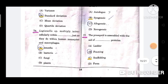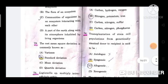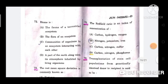Question number 74: Legionella species multiply intracellularly within -- just as they do within human monocytes and macrophages. The correct answer is option A, amoeba. Next question, question number 75: The Redfield ratio is an index of concentration of? Option B, nitrogen, potassium, iron.